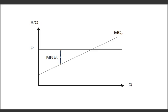Let's start with our very familiar graph of the marginal cost to produce a product Q, and we're going to assume that the firm receives a price P that does not change over the quantity. So the firm is going to be producing up until the point where its marginal cost is equal to the price, providing marginal net benefits equal to the distance between the price and the quantity.